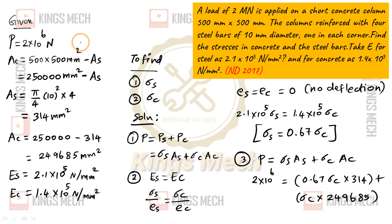In the calculation, capital P is 2 into 10 power 6. A_c is nothing but 250000 minus A_s. The steel bar area, there are 4 bars of diameter 10 mm. Pi by 4 into d square into 4, which is 314 mm square. When we substitute, we will get A_c as 249685 mm square. E_s value and E_c value are given.